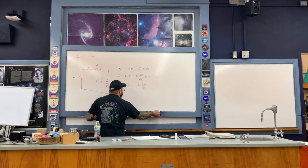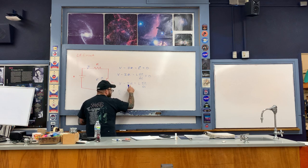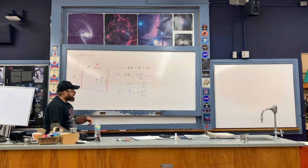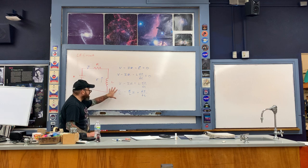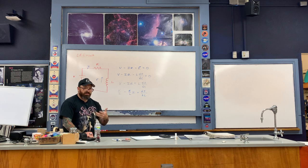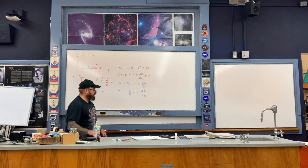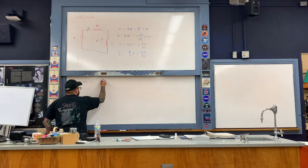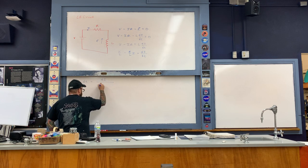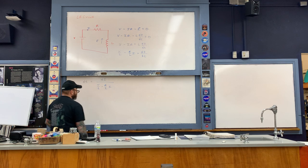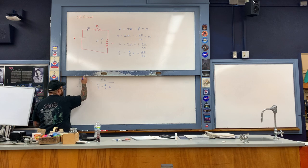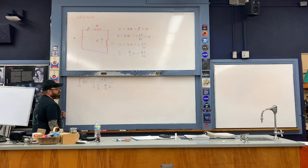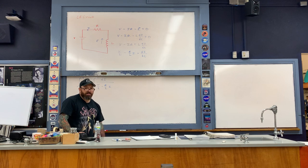We divide by the inductance L, then move dt to the left-hand side and the remaining expression to the denominator on the right-hand side — the exact same process as charging up the RC circuit and the air resistance situation. We integrate over time from 0 to t on the left, and over the current from its initial value of 0 to its steady-state value i on the right. That's essentially what we want to derive: i as a function of time.